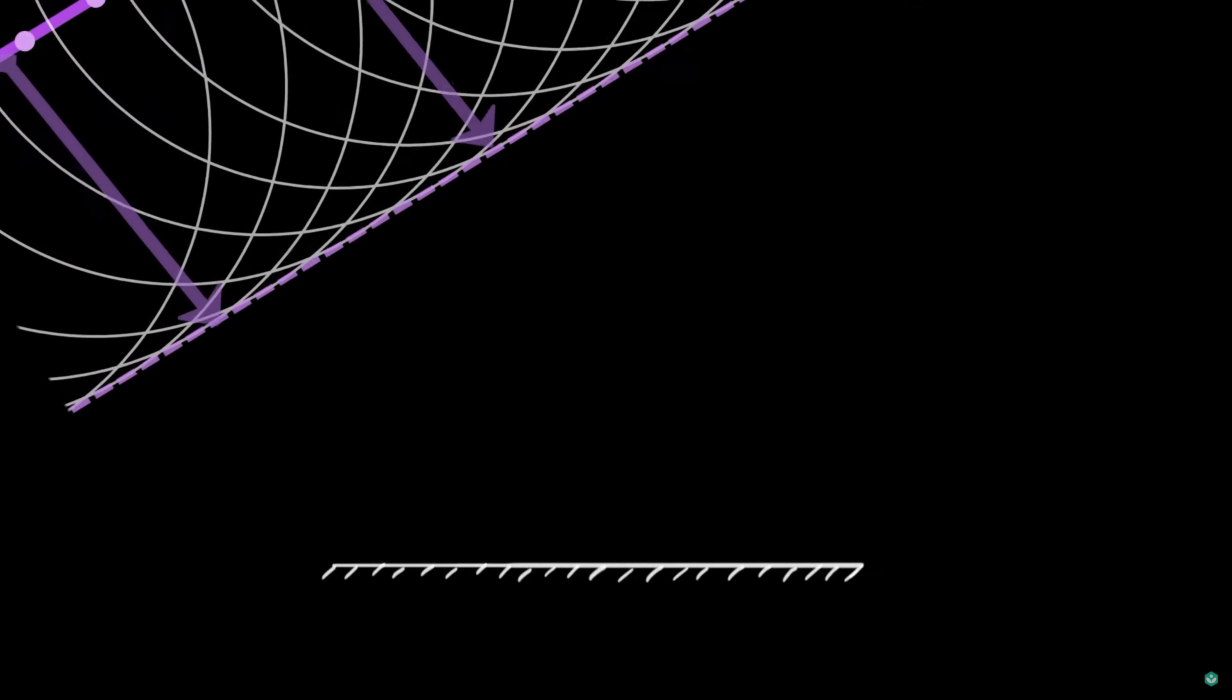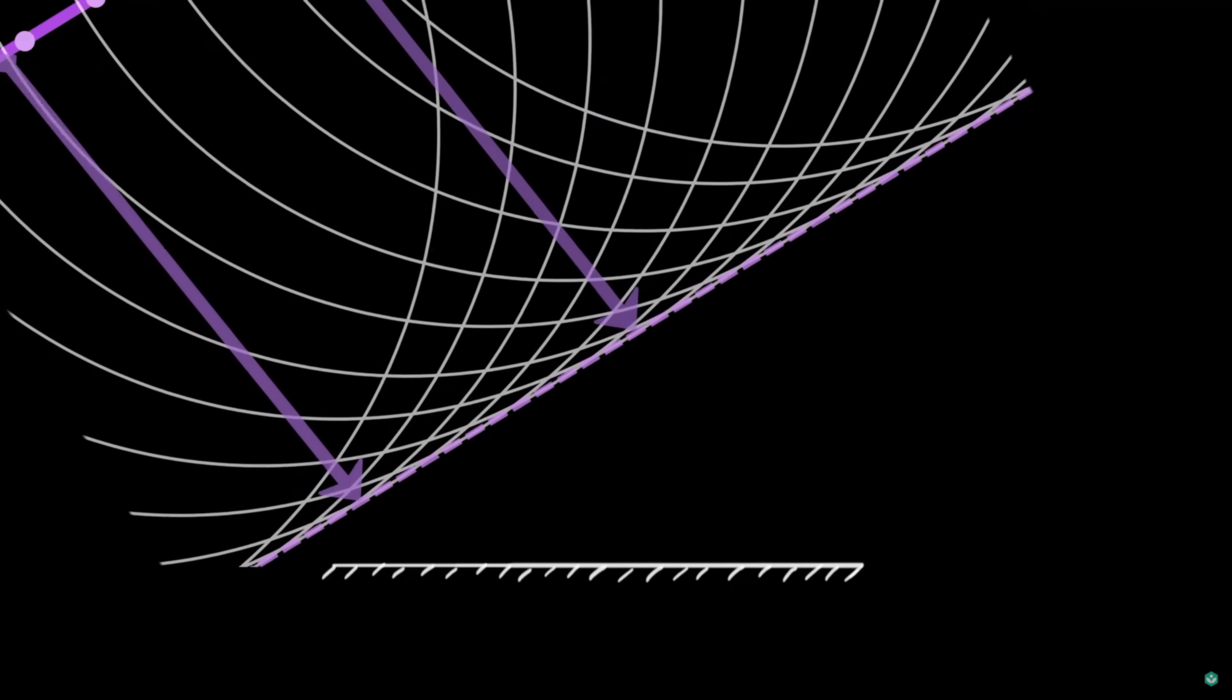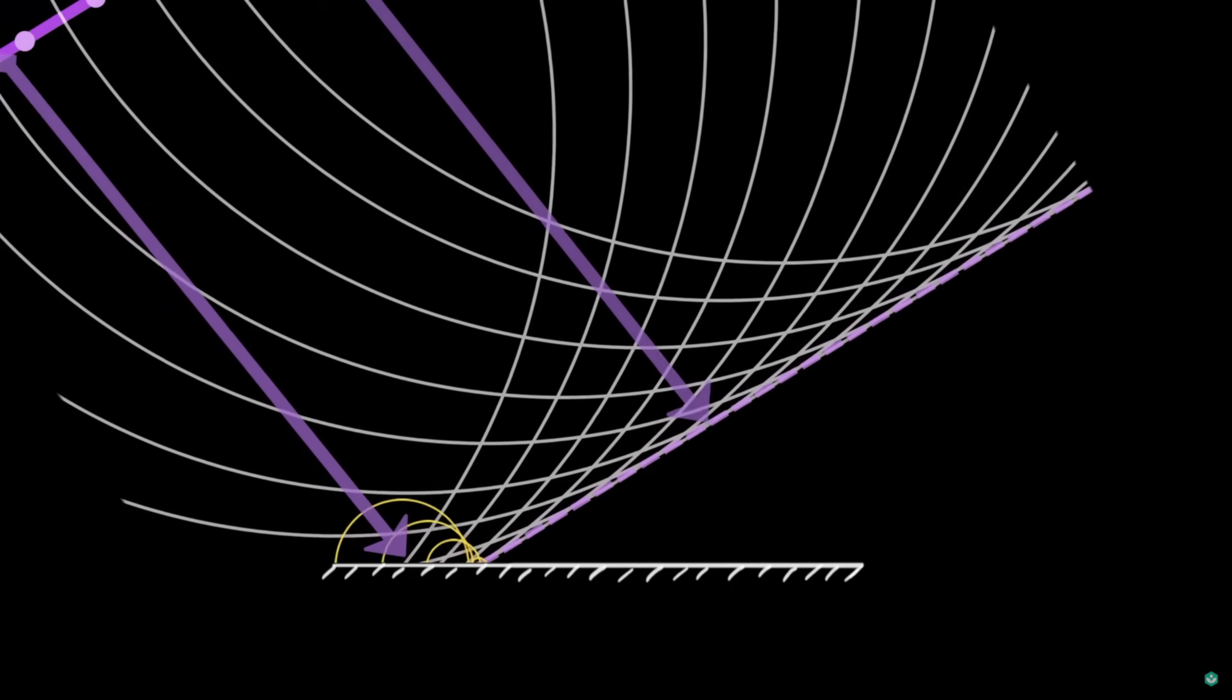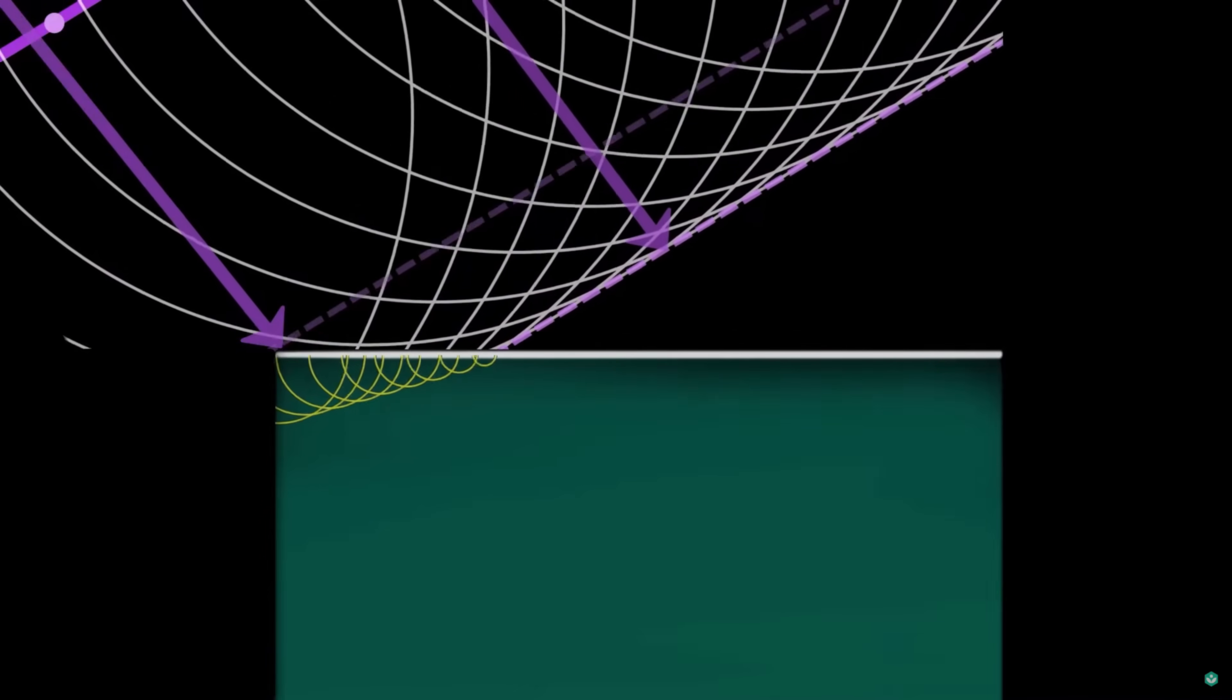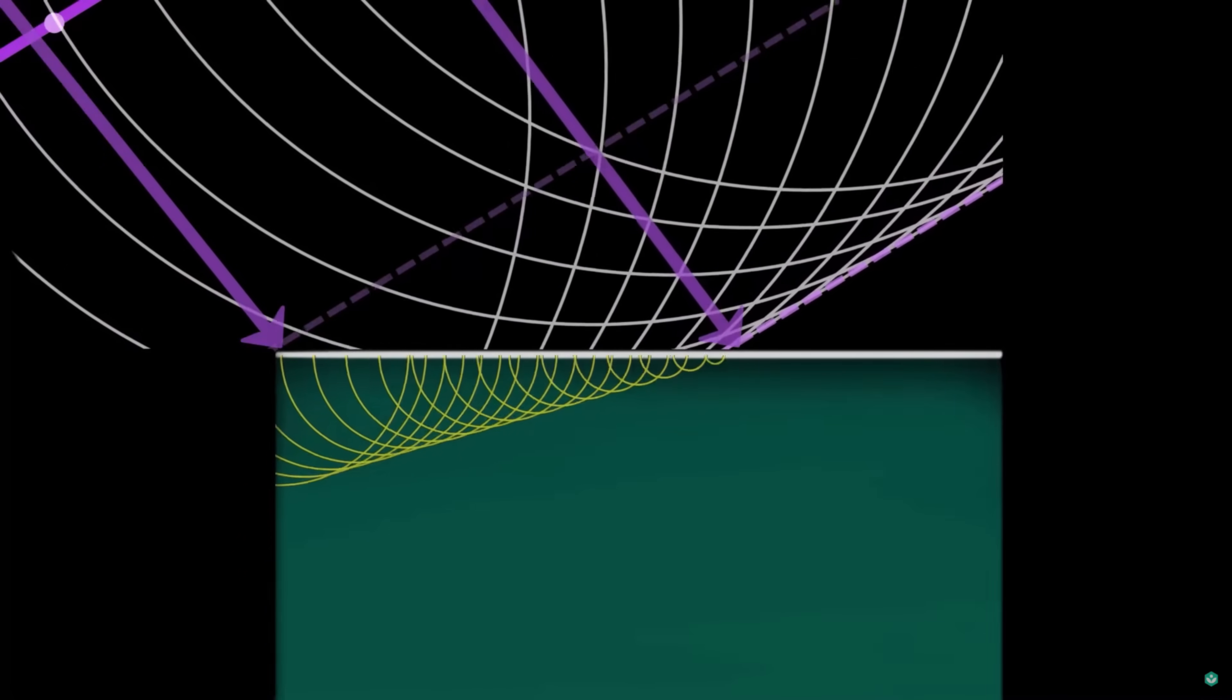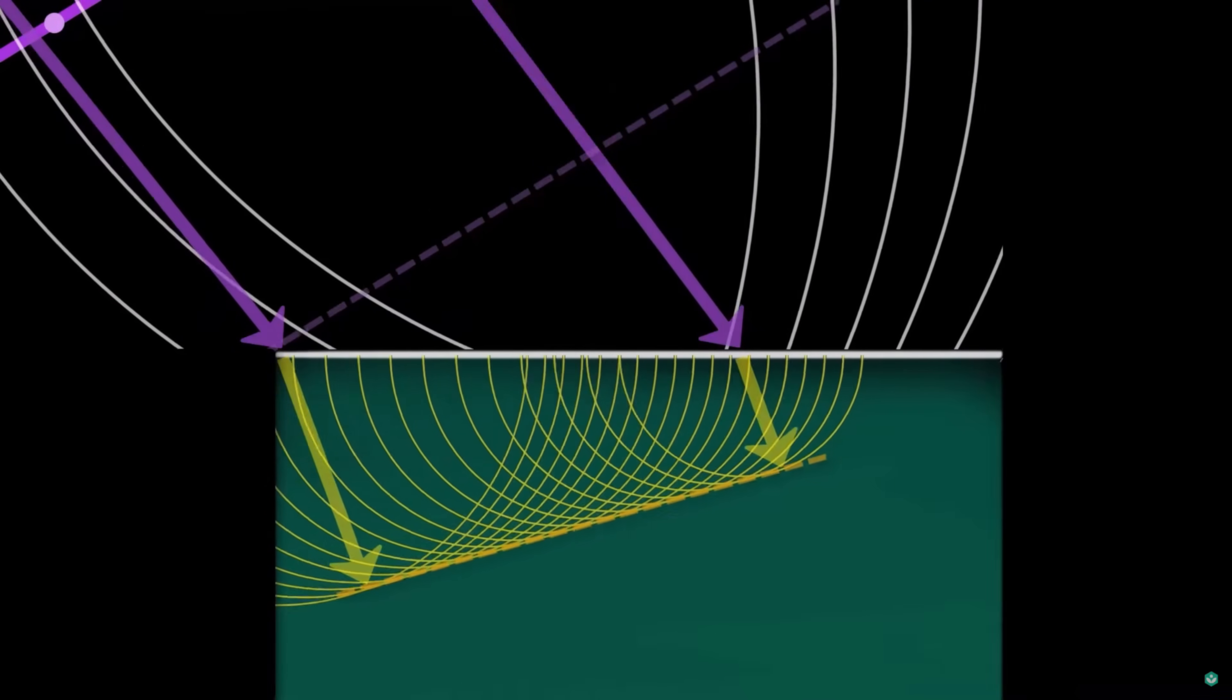Using this visualization, you could see why light reflects at the same angle it arrives. But more importantly, you could also see how refraction works. Since these wavelets slow down while passing through a material, the new wave front will shift, creating a change in direction.